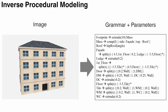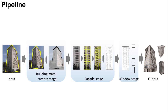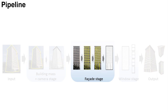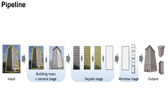Using convolutional neural networks to directly solve this problem is an option if we have enough variation in the training dataset. However, in general, it is not feasible because of the huge parameter space. To tackle this challenging problem, our key idea is to subdivide the problem into three stages: building mass, facade, and window. For each stage, we further simplify the subproblem as much as possible to reduce the parameter space and make it easier for CNNs.